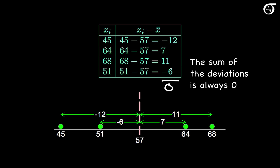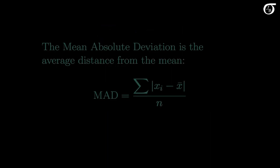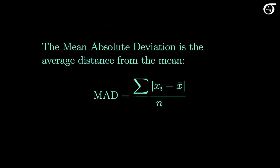But the deviations are still useful quantities. When we're interested in the variability of the observations, we don't care about the sign — we care about the distance from the mean. So one option is to ignore the sign and work with the absolute value of the deviations. The mean absolute deviation is the mean of the absolute value of the deviations, or in other words, the average distance from the mean.